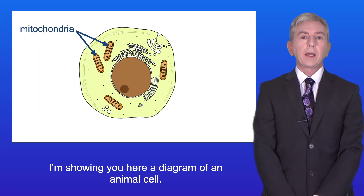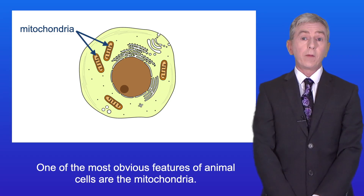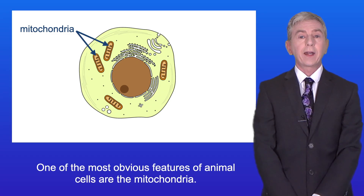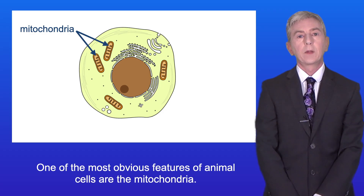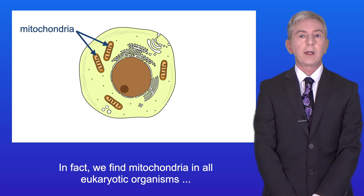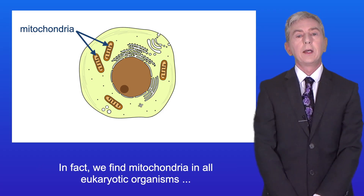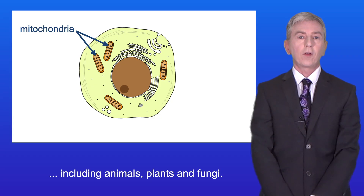I'm showing here a diagram of an animal cell and one of the most obvious features of animal cells are the mitochondria. In fact we find mitochondria in all eukaryotic organisms including animals, plants and fungi.